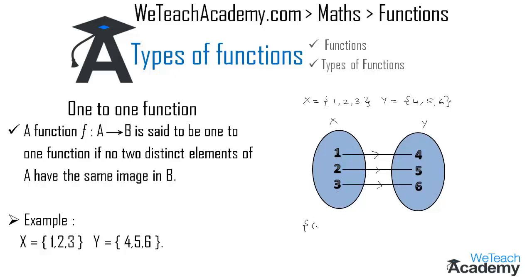We get the ordered pairs as (1,4), (2,5), and (3,6). As the elements of set X are each mapped with only one element of set Y, we call this type of function a one-to-one function.